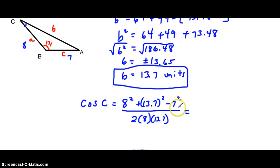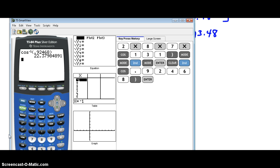When we simplify this we get the cosine of C to equal 0.92468. Then we take the inverse cosine of both sides and we get C to equal 22.4 degrees. Here's how it looks in the calculator. So you take the inverse cosine of 0.92468 and you will get your angle of 22.4 degrees.